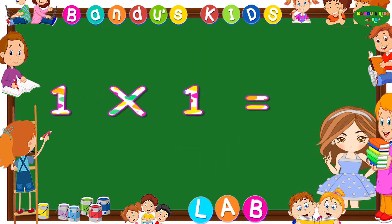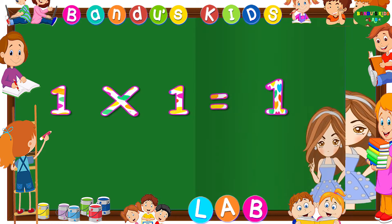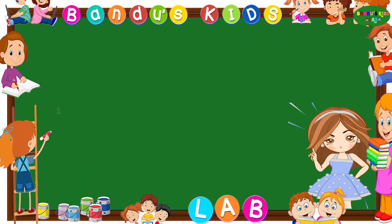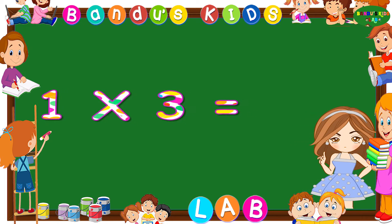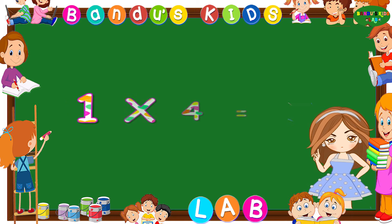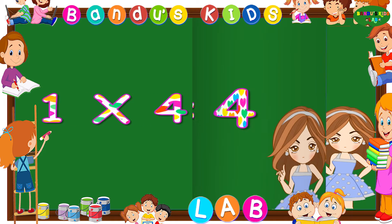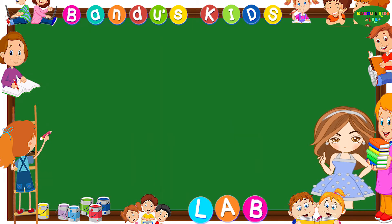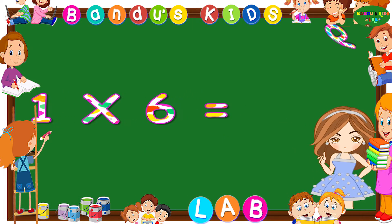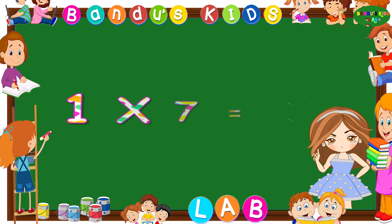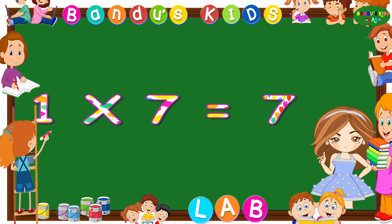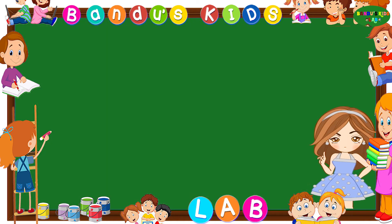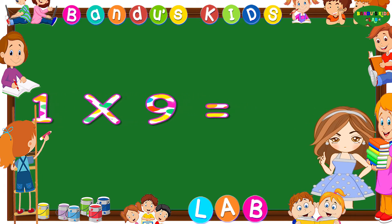One ones are one. One twos are two. One threes are three. One fours are four. One fives are five. One sixes are six. One sevens are seven. One eights are eight. One nines are nine.